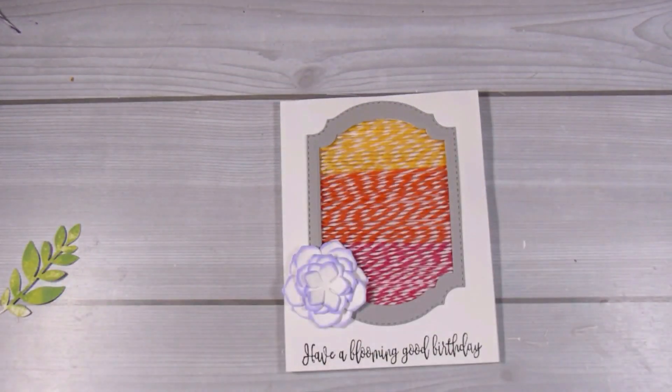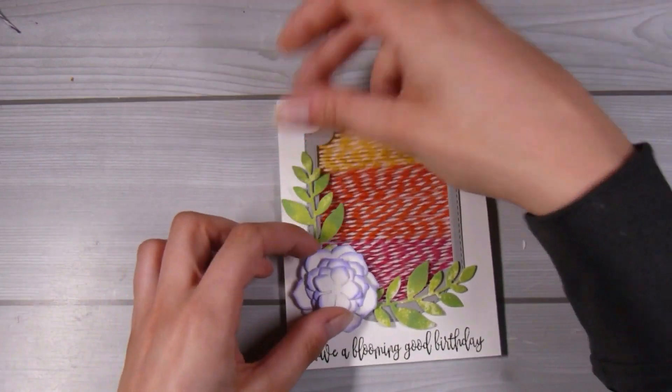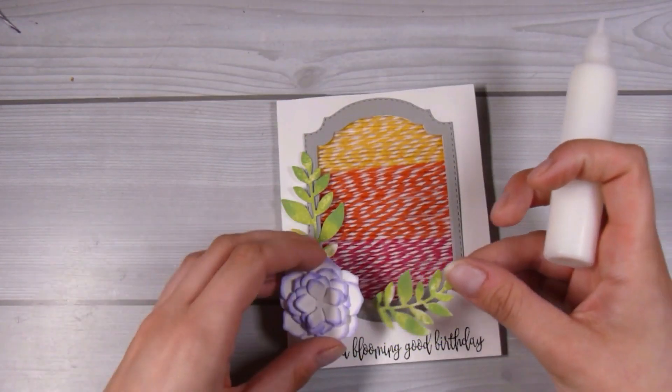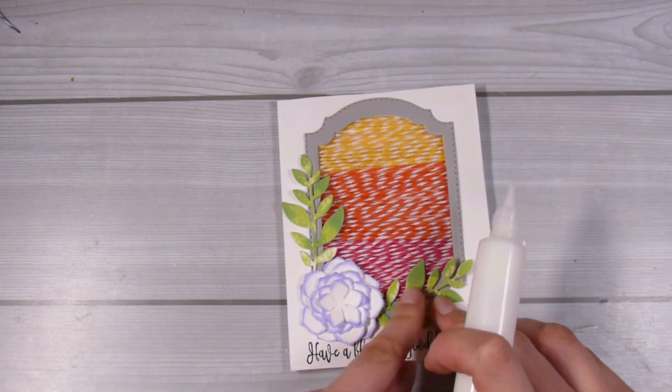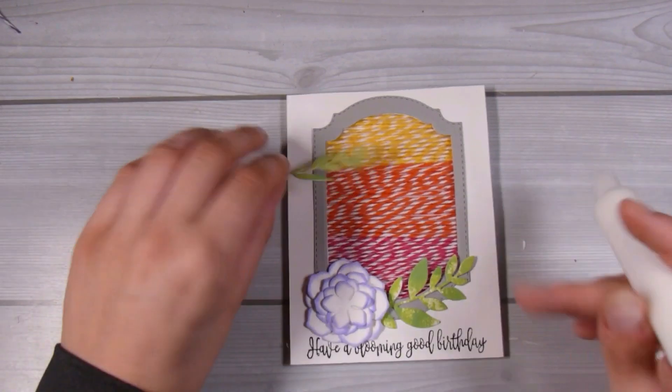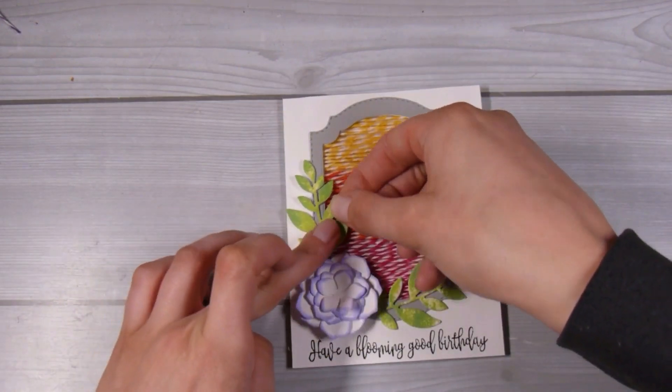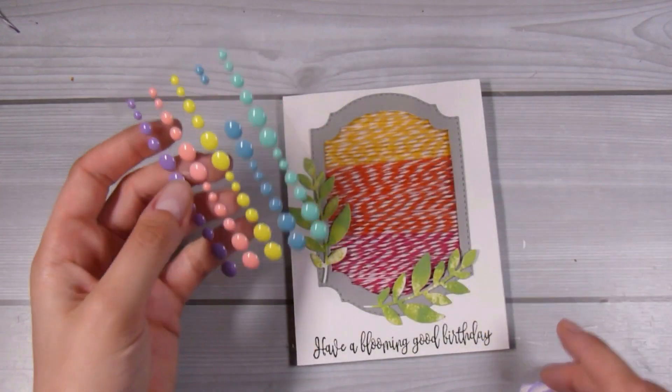Now I'm just going to use a little bit of liquid glue behind these two leaves and the flower. Then just before I glue down the flower I'm going to add a little enamel dot in the middle of the flower, again just as a little finishing touch.